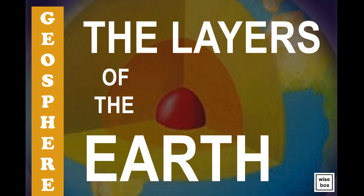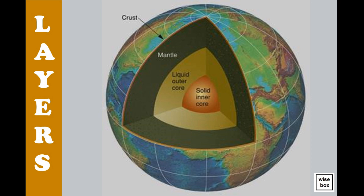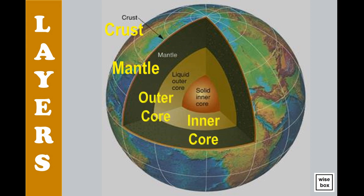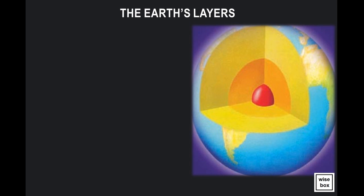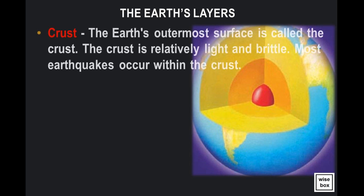The layers of the Earth. The Earth's outermost surface is called the crust. The crust is relatively light and brittle. Most earthquakes occur within the crust.